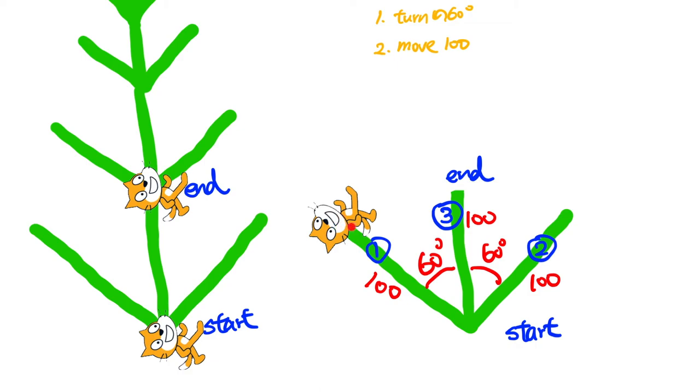But actually, we don't need two steps to finish this. Remember, we have learned the concept of directed numbers in mathematics. So if we move by negative 100 steps, the cat will go back to the starting position.